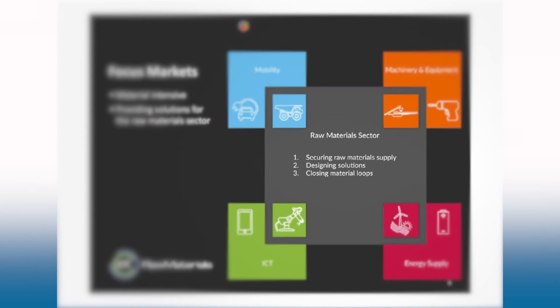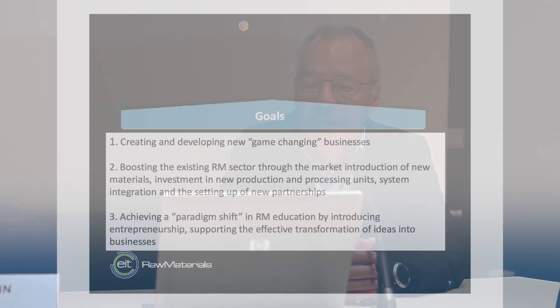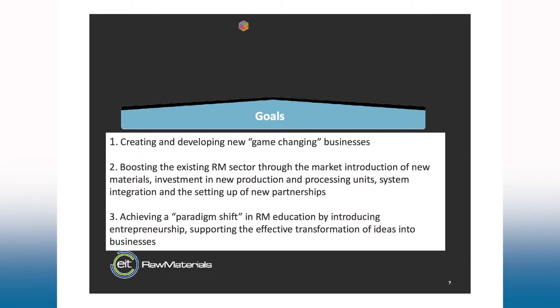Our three missions are: first, to secure the raw material supply; second, to design new solutions — including closing material loops through circular economy; and third, we have three goals: to create new game-changing businesses in raw materials, to boost existing raw material sectors with new services and products, and to achieve a real paradigm shift in raw material education by bringing an entrepreneurship spirit.